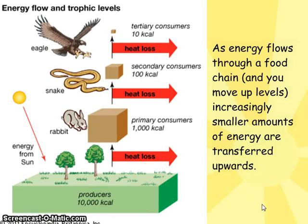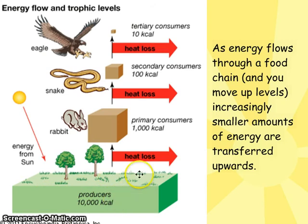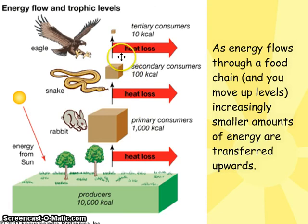Here is an example of how energy moves through just a chain — one part of a food web. Notice the amount of energy at each level. Producers produce ten thousand kilocalories of energy. When the bunny eats the producer's food, the bunny has one thousand kilocalories. The snake that eats the bunny has a hundred kilocalories, and the eagle that eats the snake has ten kilocalories. At each consumer level, energy is lost.